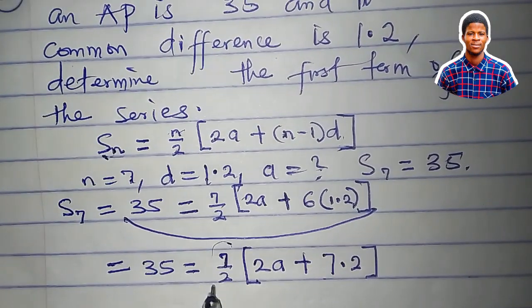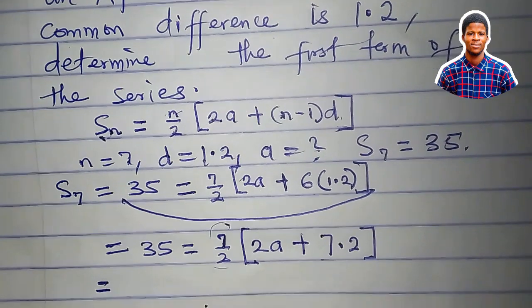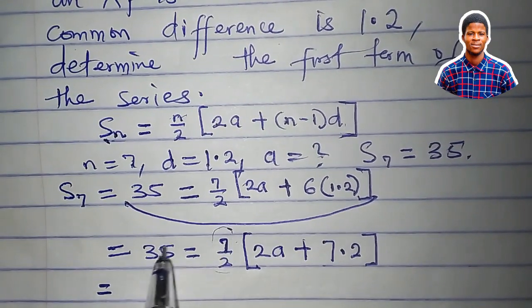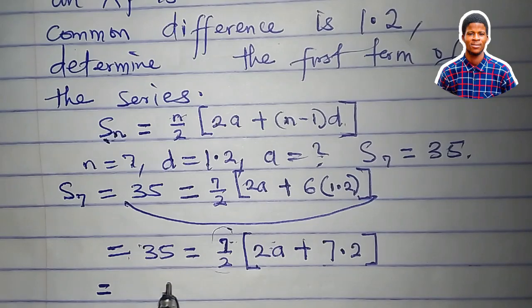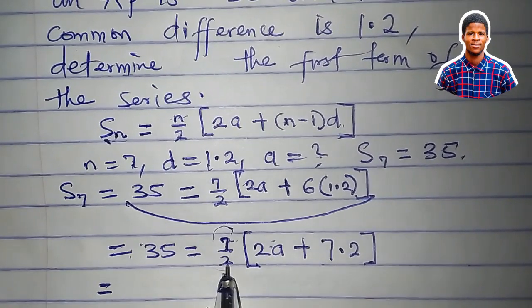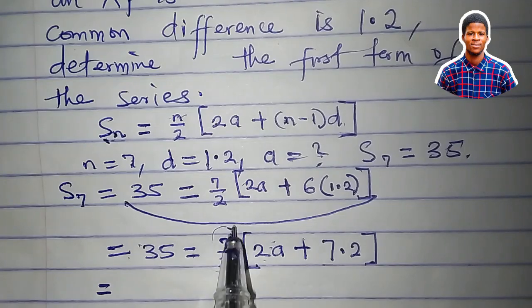I want to eliminate this 7 over 2 from here. A simple way to do it is to multiply both sides by the reciprocal of 7 over 2. Since 7 over 2 is a fraction, if we multiply it by 2 over 7, it turns to 1.